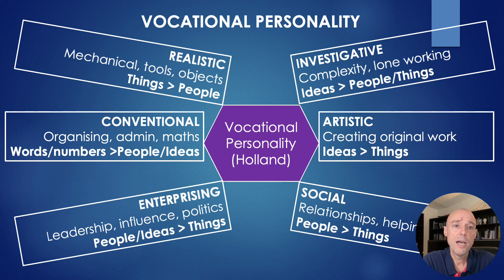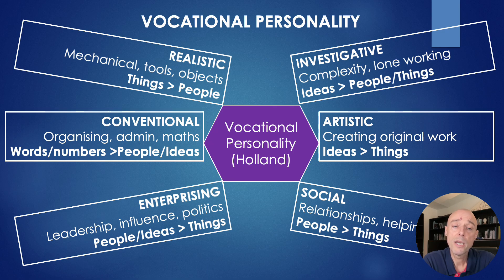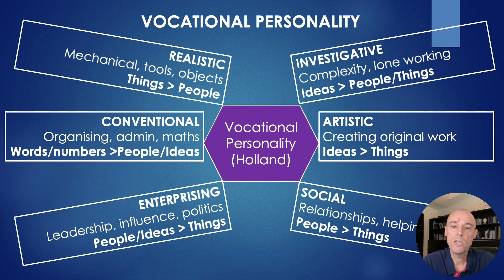What are those six personality types? The realistic personality — these are people who like mechanical things, tools and objects, and prefer working with things much more than people. The conventional personality — people who like organising, maths and administration, and work with words and numbers more than people and ideas. The enterprising personality — people who like leadership, influence and politics, and prefer working with people and ideas over things. The investigative personality — people who like complexity, often like working alone, and prefer ideas over people or things. The artistic personality — about creating original work, preferring ideas over things. And the social personality — valuing relationships, helping others and making a difference, preferring working with people over things.